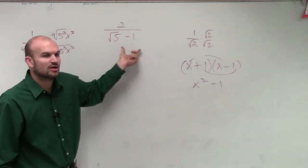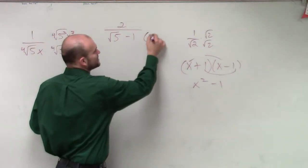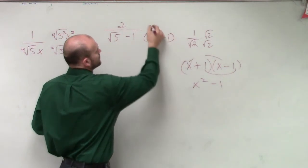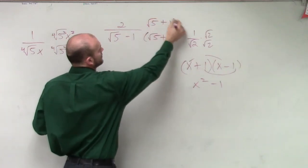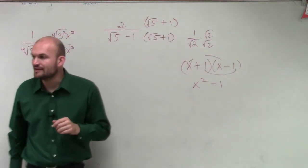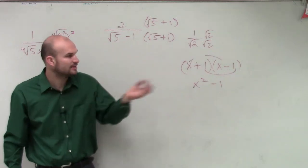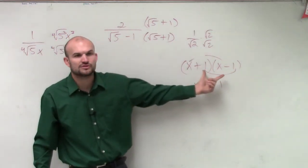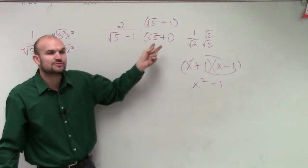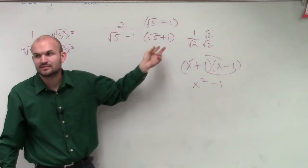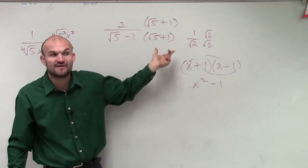So let's take a look at this. If I multiply this by my difference of two squares, something very cool is going to happen. First thing, I'm going to square my first two terms. The square root of 5 times square root of 5 is going to leave me with square root of 5 squared, which is just 5.